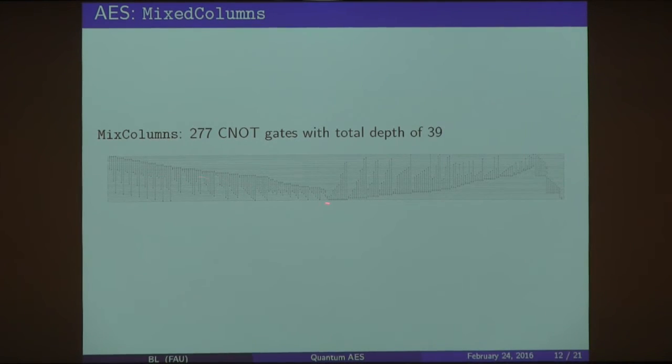Here's an example of the MixedColumns operation with the LUP decomposition. Again, you could see the upper part at the beginning, the lower part at the end. And at the very end, I did leave in for this slide the swap gates, which we actually, obviously didn't implement, but just so you can see what's actually happening. Again, instead of implementing the permutation, you just keep track of the qubits where they're at, or where they should be, and you're fine.